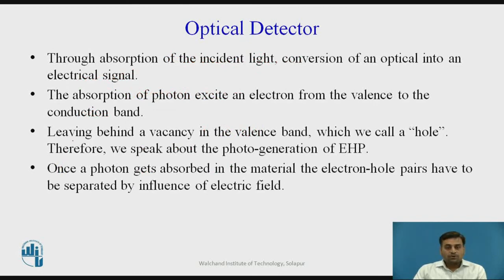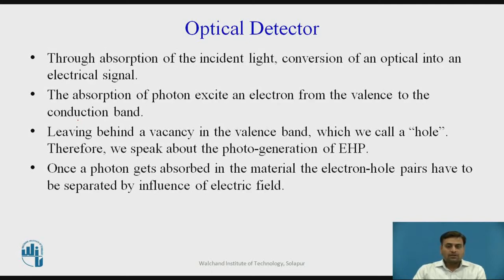Let us see how the optical detection process takes place. Whenever a photon is incident on a photodetecting material, it gets converted into an electrical signal through the absorption process. The absorption of a photon excites an electron from the valence band to the conduction band. This excitation leaves a vacancy in the valence band, which we call a hole. Therefore, whenever we encounter absorption or speak about photogeneration, we refer to it as the generation of an electron-hole pair. Once a photon is absorbed in the material, the electron-hole pair must be separated by the influence of an electric field.